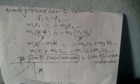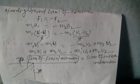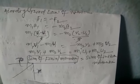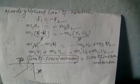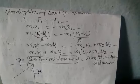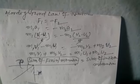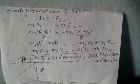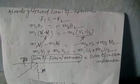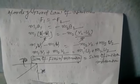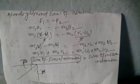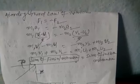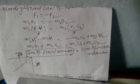Rearranging: M1·V1 plus M2·V2 equals M1·U1 plus M2·U2. This means before the collision, the total momentum is M1·U1 plus M2·U2, and after the collision the total momentum is M1·V1 plus M2·V2 — the total momentum has remained the same. Before and after the collision, momentum is conserved. This is known as the conservation of momentum, and Newton's third law defines it. In summary: the first law defines inertia, the second law defines momentum, and the third law defines conservation of momentum.